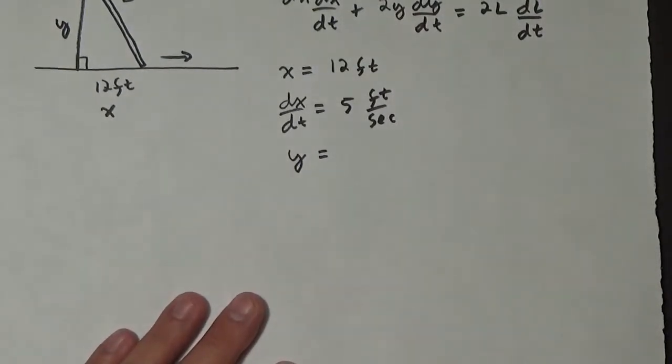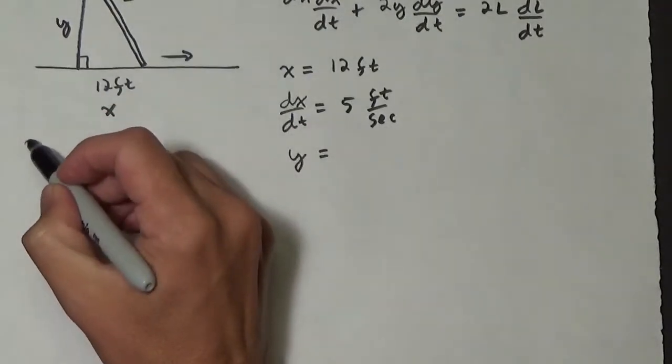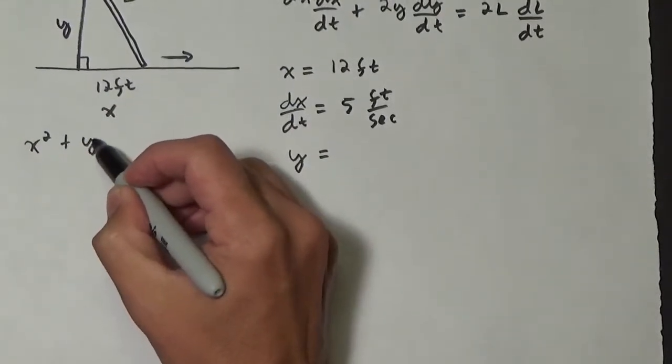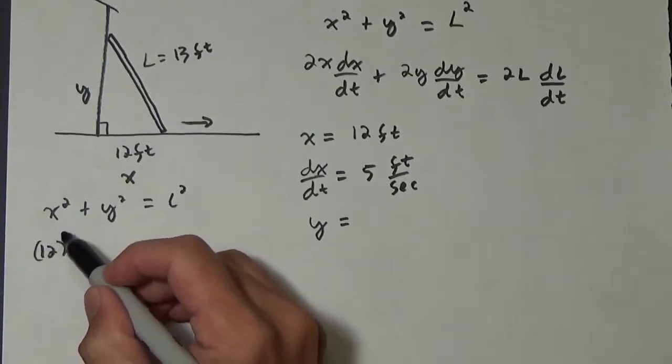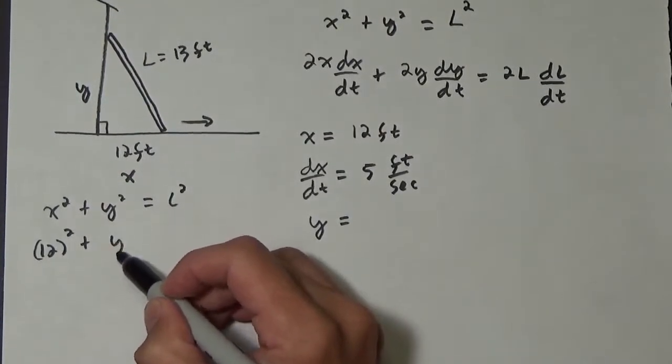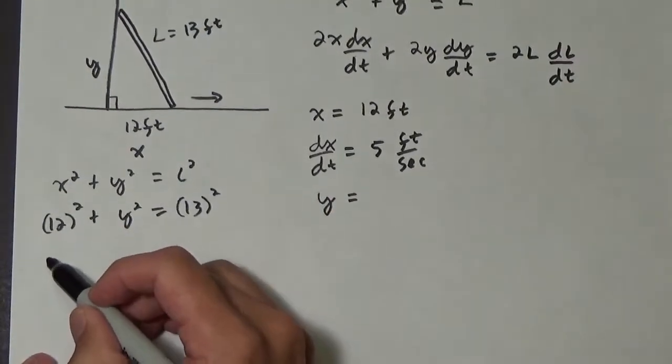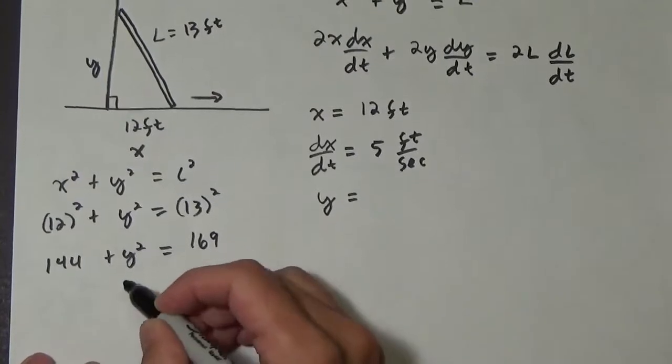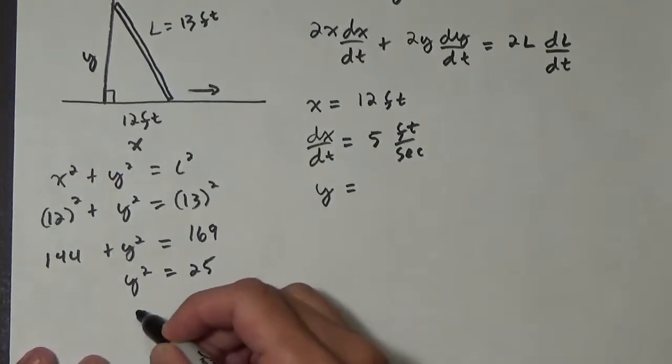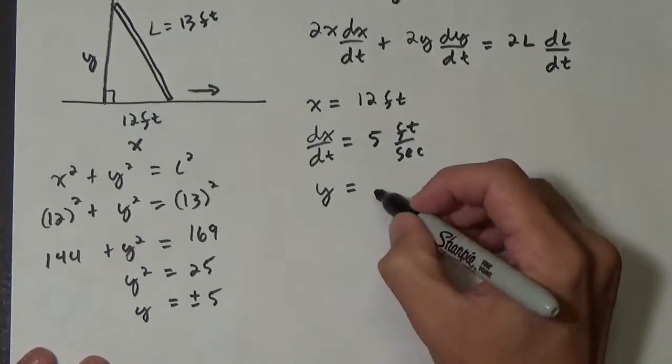Actually, we don't have y right now. So we've got to figure out y. In this case, we'll use the Pythagorean theorem. So we have x squared plus y squared equals L squared. So we have 12 squared plus y squared equals 13 squared. So we have 144 plus y squared equals 169. So y squared is 25 and y is plus or minus 5. Of course, 5 makes sense, so we're going to use that.